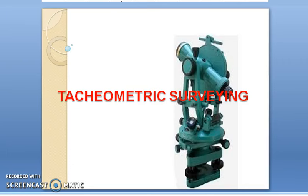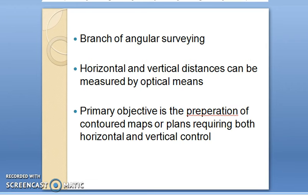Hello everyone, today we will study in detail about tachymetric surveying. Tachymetric surveying is actually a branch of angular surveying itself. In this tachymetric surveying, it measures horizontal as well as vertical distances by optical means.